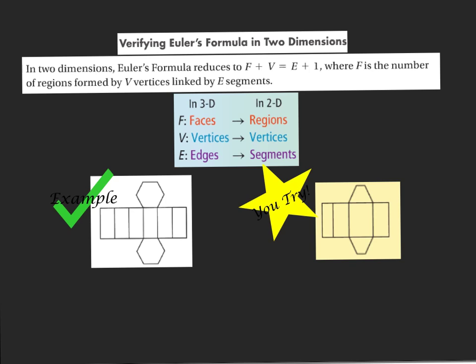Let's look at our first 2D example. Writing out the formula: F plus V equals E plus 1. First I'm going to count how many faces I have — and notice that faces is the same thing as regions. I count 8 faces.